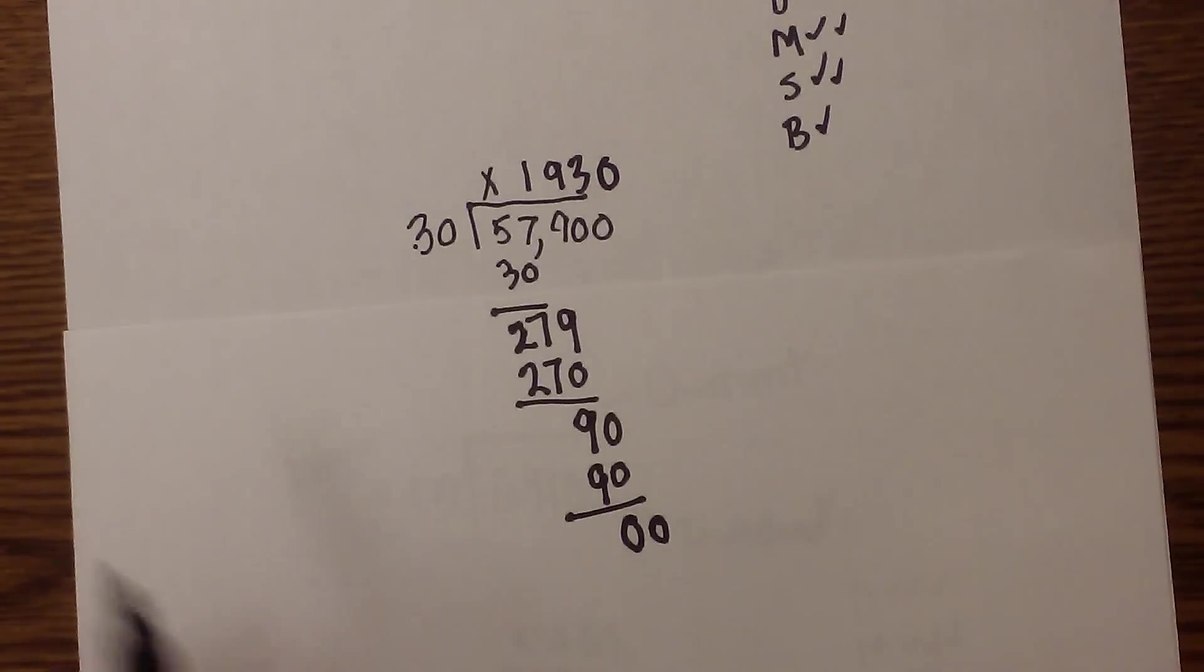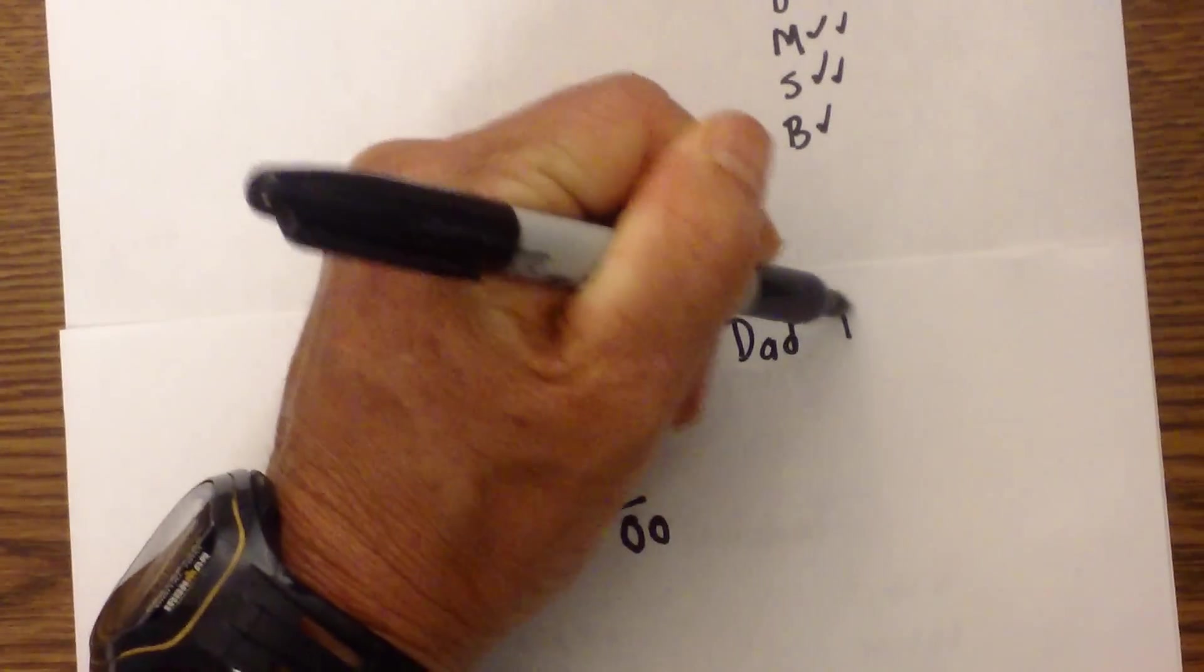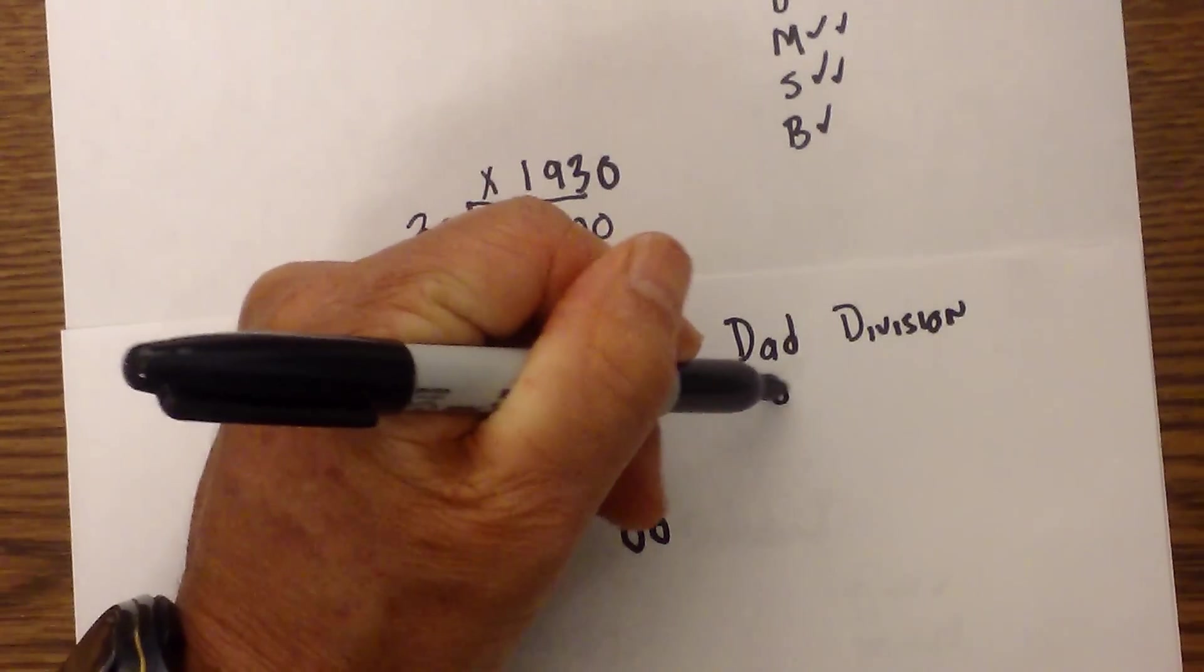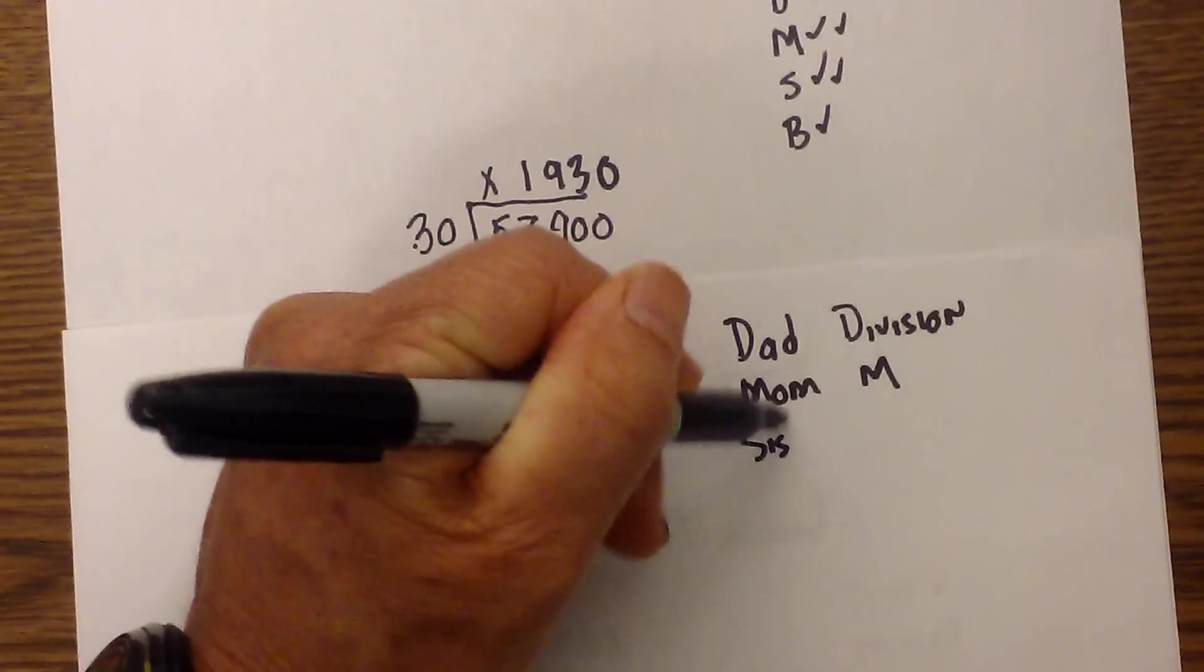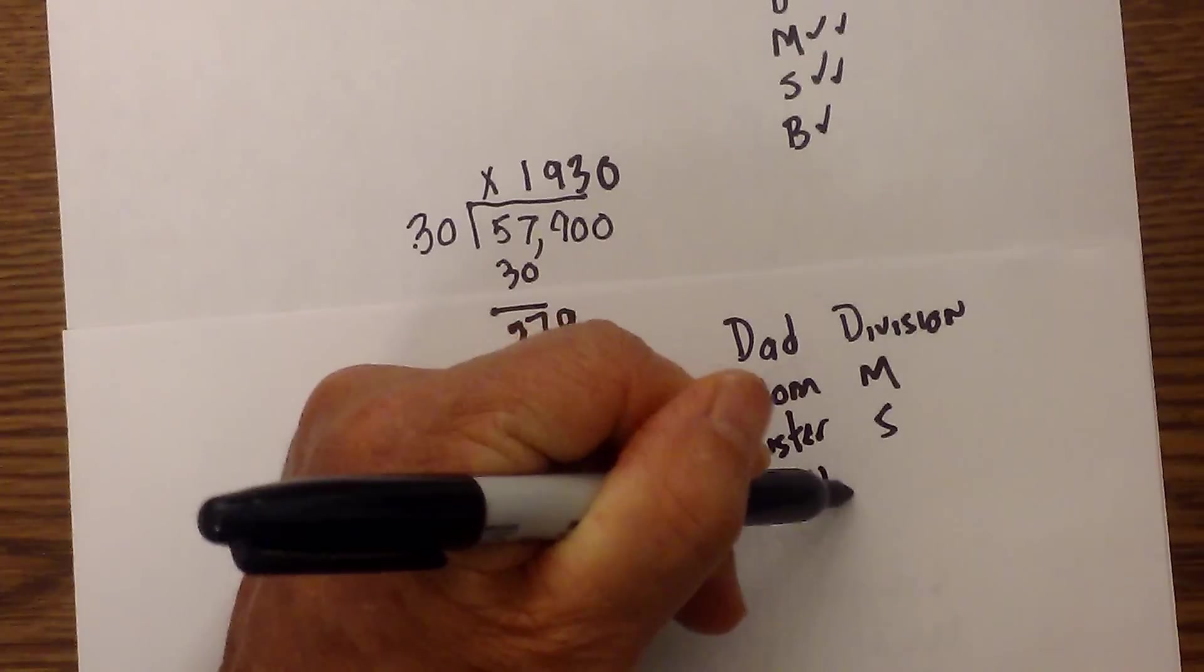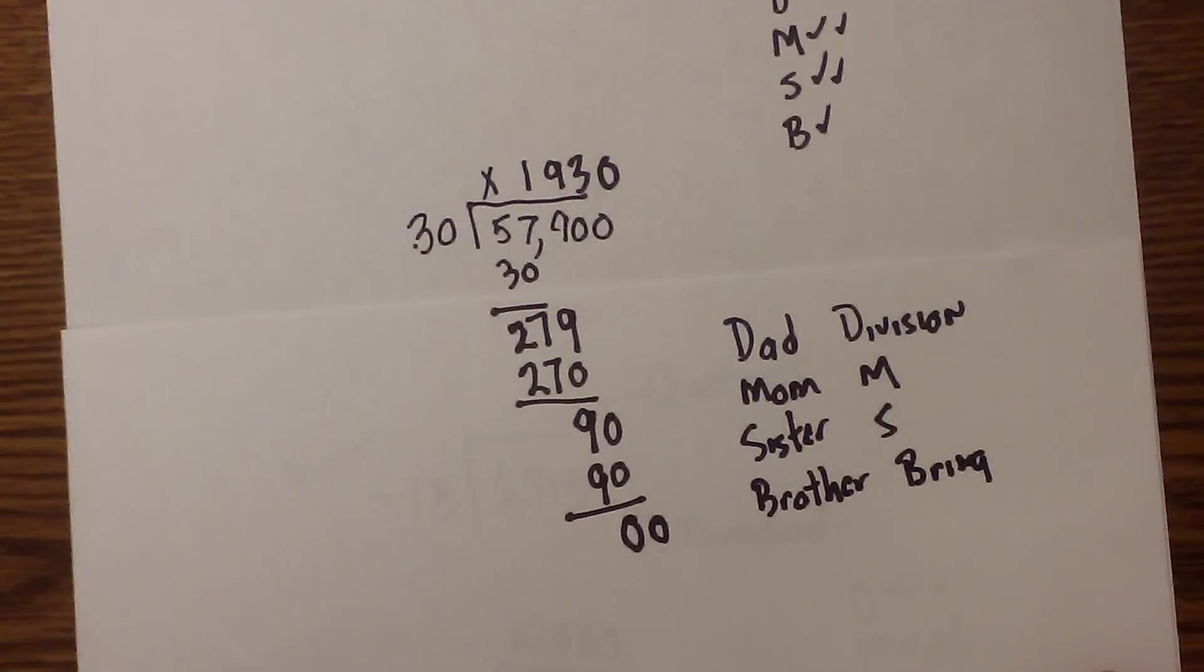I hope that helps. Remember to use dad for division, mom for multiplication, sister for subtraction, and brother for bring it down. Hope this helps, thanks for watching. Please subscribe and share.